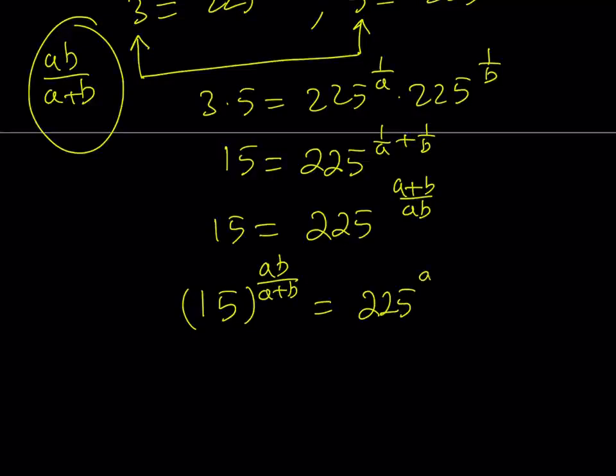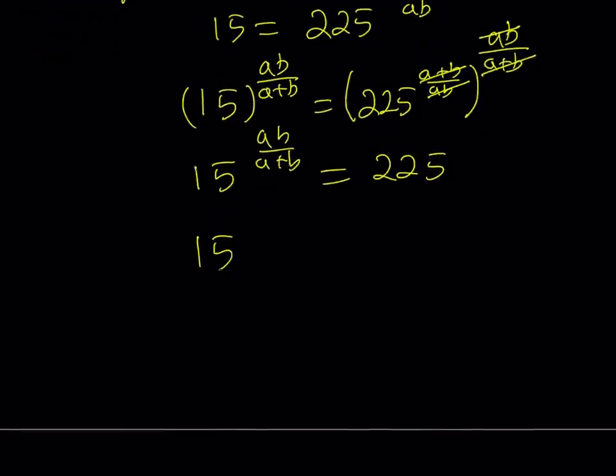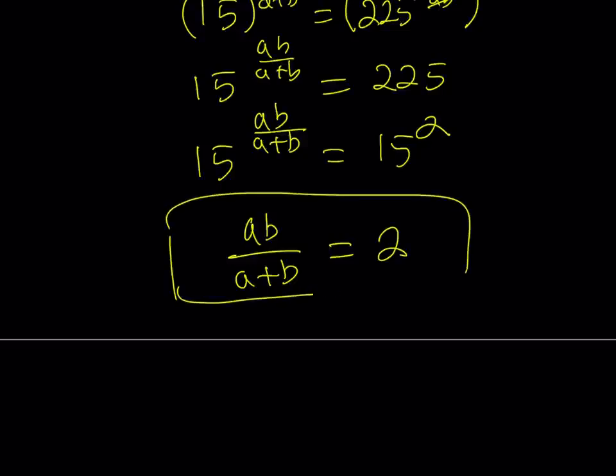Now I have 225 to the power a plus b over ab, which is raised to the power ab over a plus b. The reason for that is to take advantage of this expression. On the right-hand side, everything is going to cancel out in the exponents and we end up with 1. So 15 to the power ab over a plus b equals 225. And 225 happens to be 15 squared. Since the bases are equal, the exponents are also equal. We can safely say that ab over a plus b equals 2, as we found with the first method.